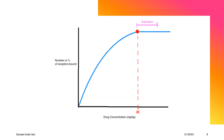The diagram shows the binding curve or the saturative curve for a particular drug. The x-axis represents the drug concentration in milligrams per kilogram, and the y-axis represents the number or percent of receptors that are bound to the drug. This can be used to show a drug's affinity for its receptor. When we increase the dose or concentration of the drug that is administered, we can also see an increase in the number of receptors that are bound to the particular drug.